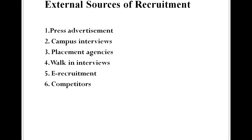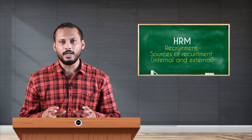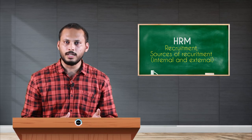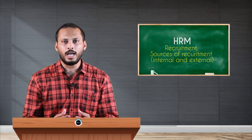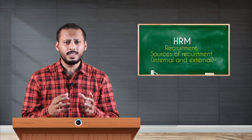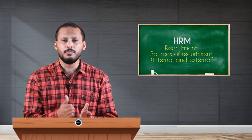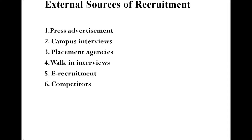The sixth external source of recruitment is competitors. Every organization has rivals or competitors in the industry. For example, for Amazon, Flipkart is a competitor. If Flipkart has a vacancy for a manager, it can think of recruiting a candidate from Amazon by offering better policies, better payment, and a better position. An organization can attract suitable employees from rival companies by offering better benefits.